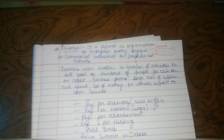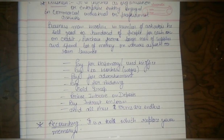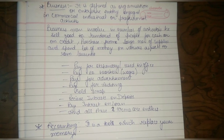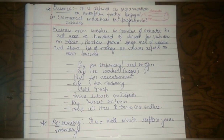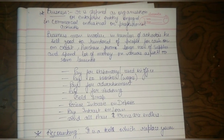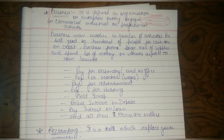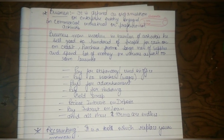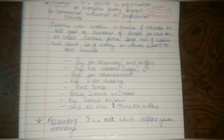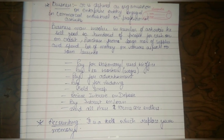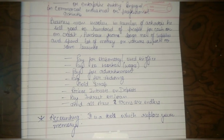A businessman involves a number of activities. He sells goods to hundreds of people for cash or on credit, and purchases from a large number of suppliers, spending a lot of money. So both purchasing and spending are done. What kind of payments does a businessman have to face? They have to pay for stationery used in the office and pay the workers.